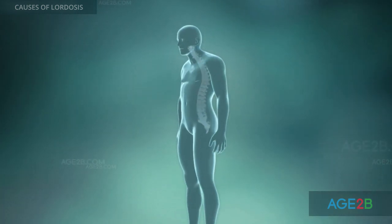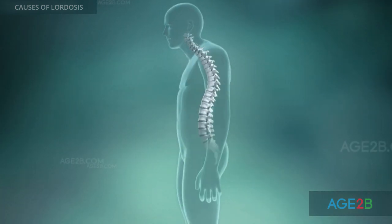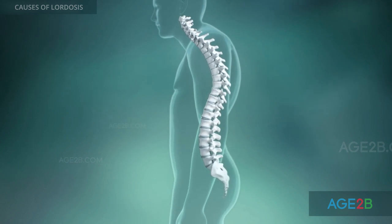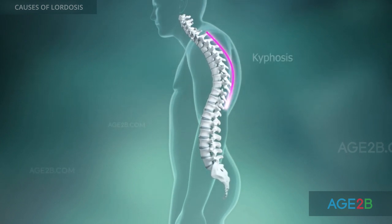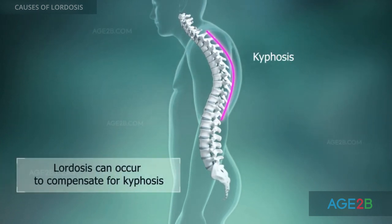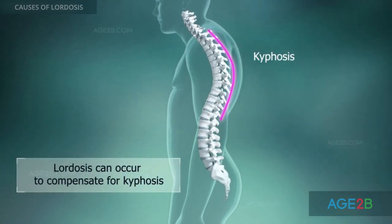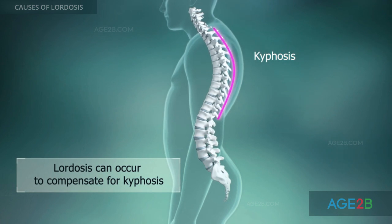When kyphosis occurs, lordosis can develop to compensate for increased stress on the lower spine.